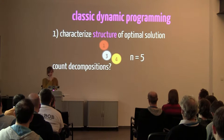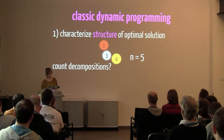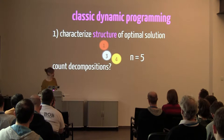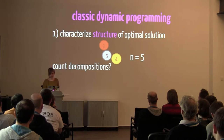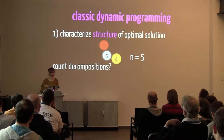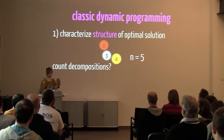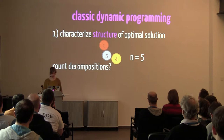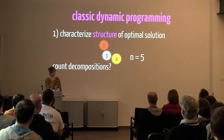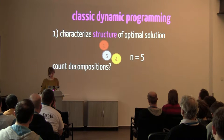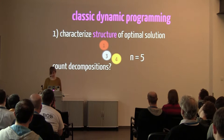Let's do this with the money-changing problem. We have one, three, and four dollar coins, and a given amount of five. The first step is to characterize the structure of an optimal solution — if I want to decompose the number five, an optimal solution is some kind of sum composed of the coin values one, three, and four.